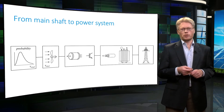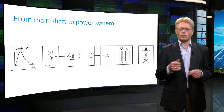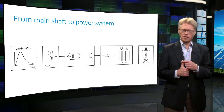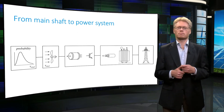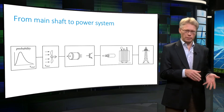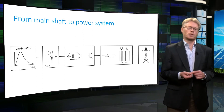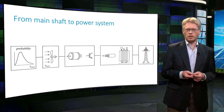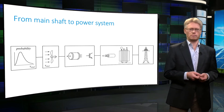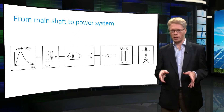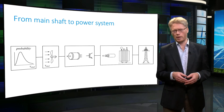The electrical system that makes this connection can be divided into two parts. First, the part inside the wind turbine, called the generator system. This system converts the mechanical power into electrical power. Second, a part outside the wind turbine, called the collection and transmission system. This system collects the power within a wind farm and transmits it to the power system.